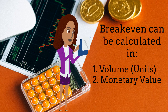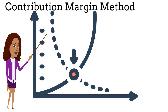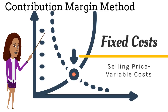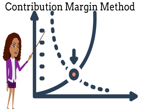Finally, let's look at two of the more popular methods of calculating the break-even point. One of the most simplistic and popular ways of calculating break-even in units is the contribution margin method. For this method, we divide our fixed cost by the contribution margin, which is our selling price minus our variable costs. Now let's look at an example.